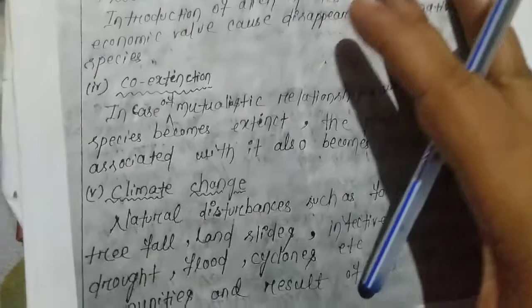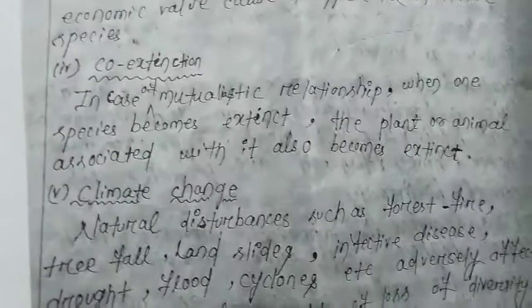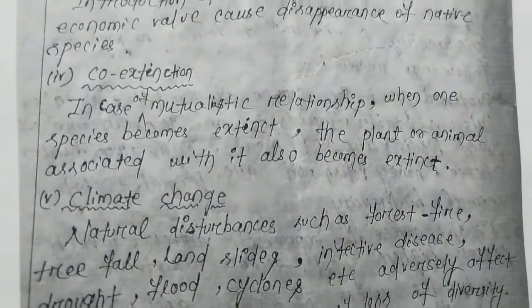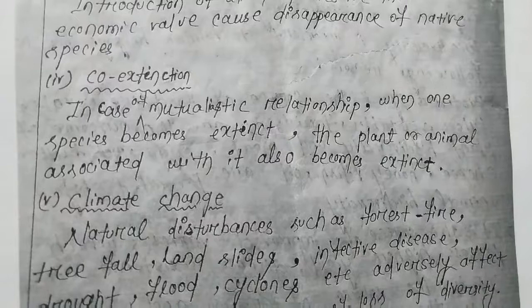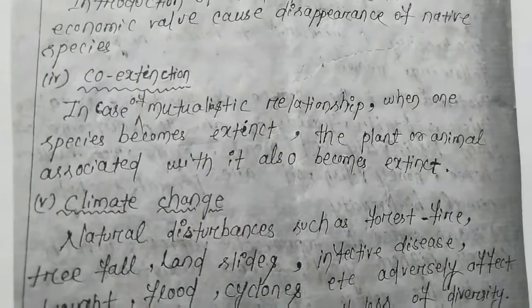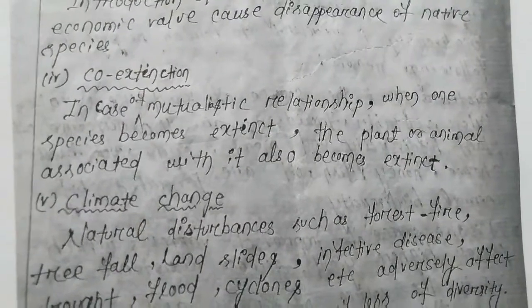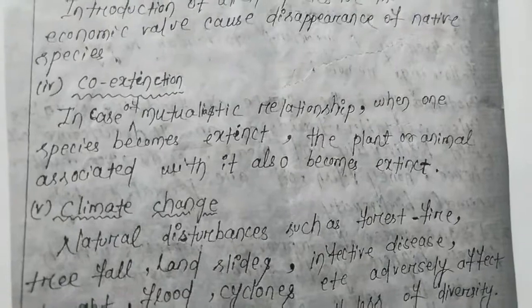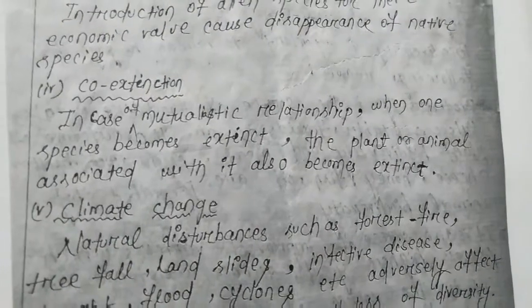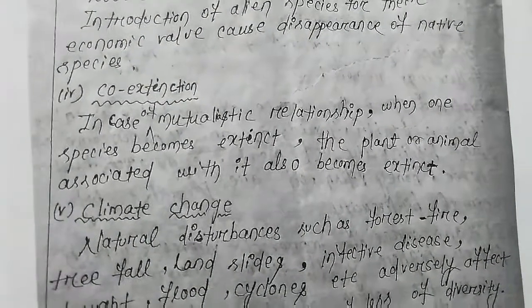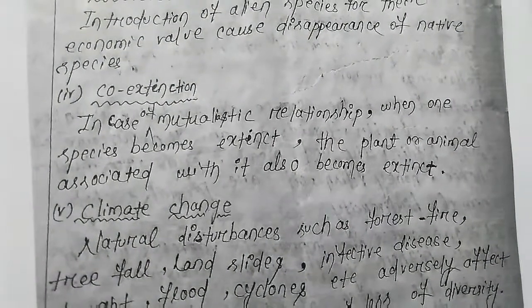Then, co-extinction: in the case of a mutualistic relationship, when one species becomes extinct, the plant or animal associated with it also becomes extinct.